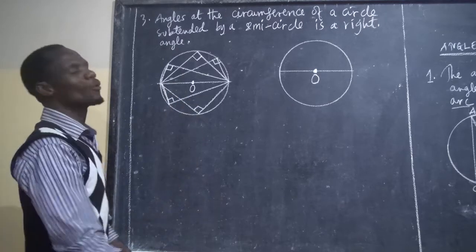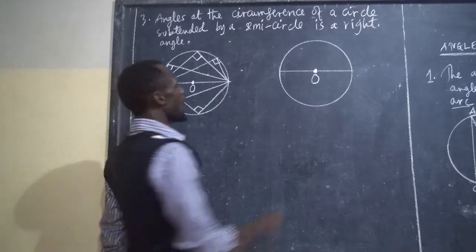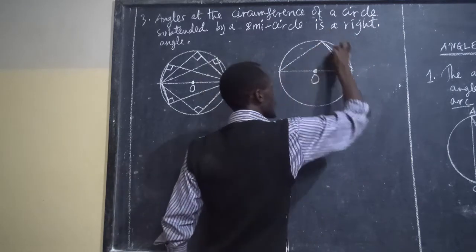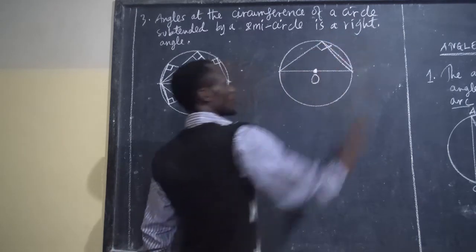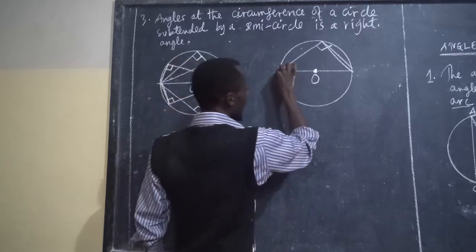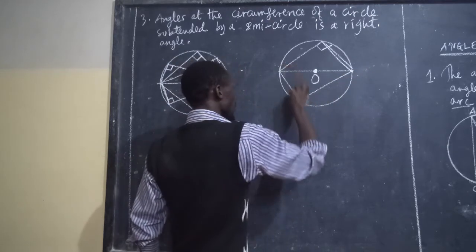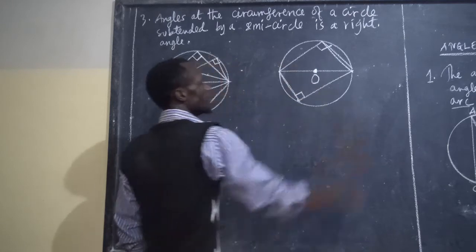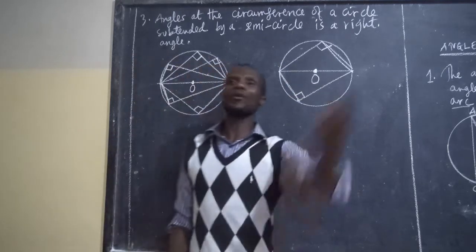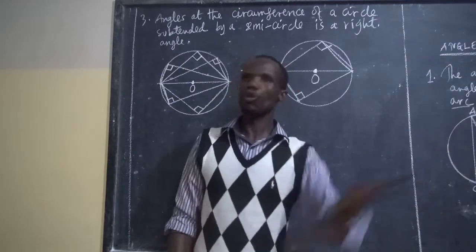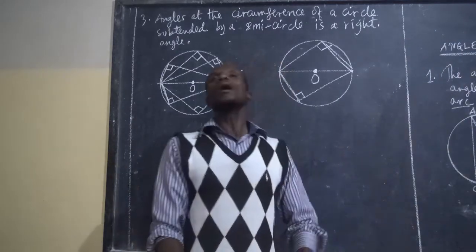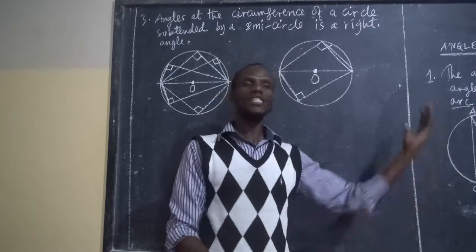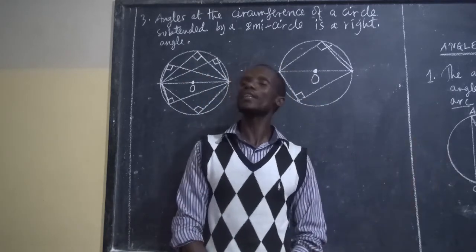That is the principle — no matter where you draw the line from, this angle is always a right angle. You can even go and prove that wrong — just try. Do it using a protractor. Draw a precise circle and just prove it. You'll find it is 90 degrees.